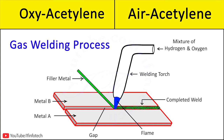The gas welding process is suitable only for soft and thin sheets, and the metal joining rate is low. There are no shielding areas, which causes more welding defects. Gas welding has a large heat-affected zone, which can cause changes in the mechanical properties of the base metal.